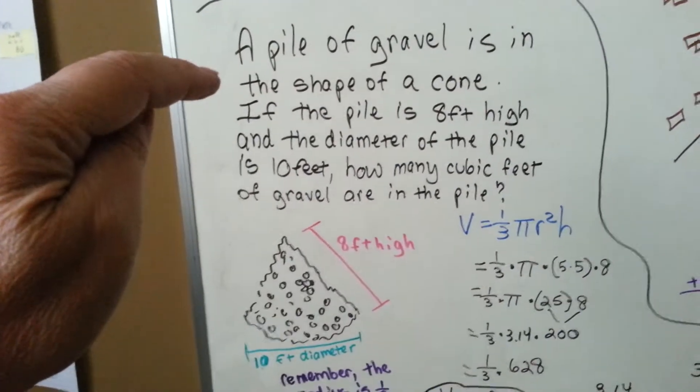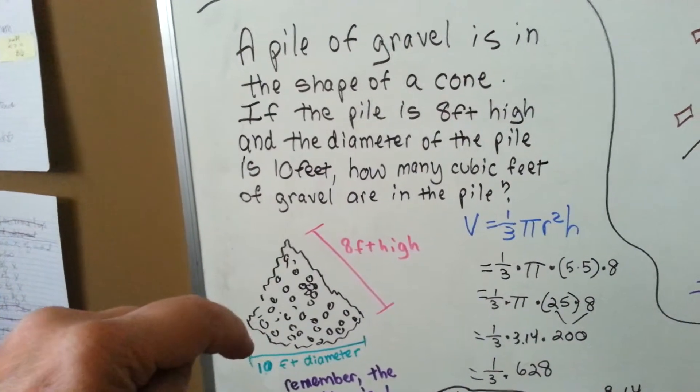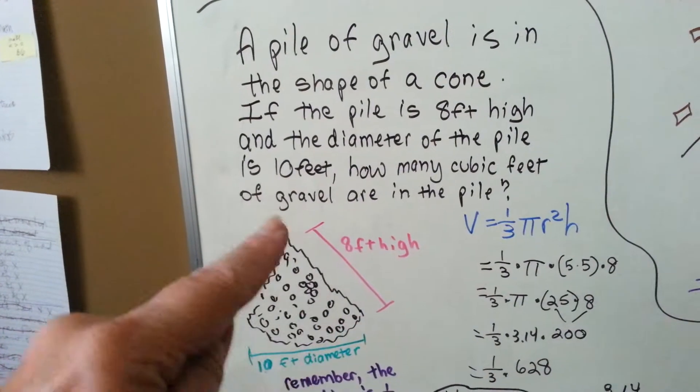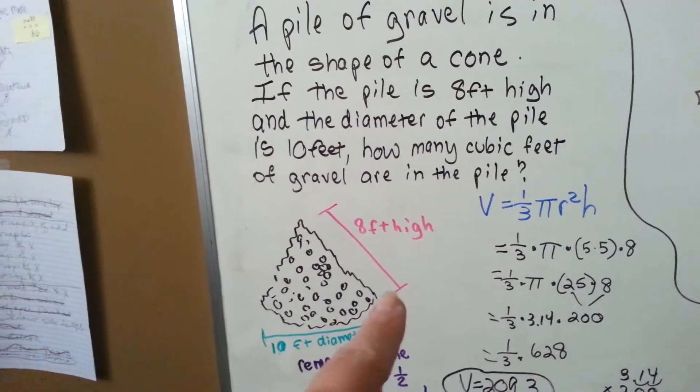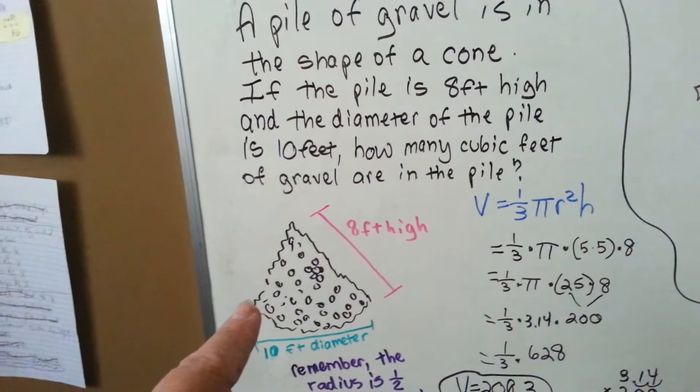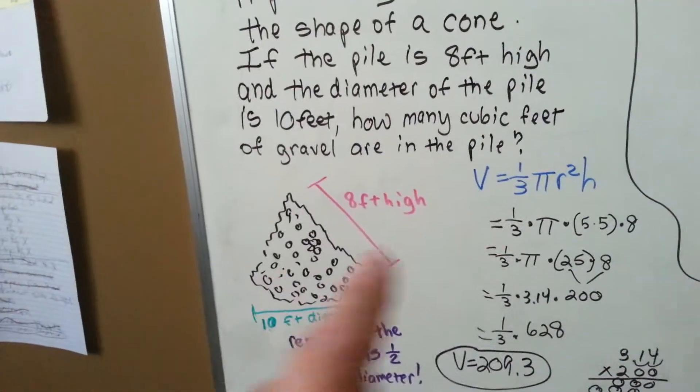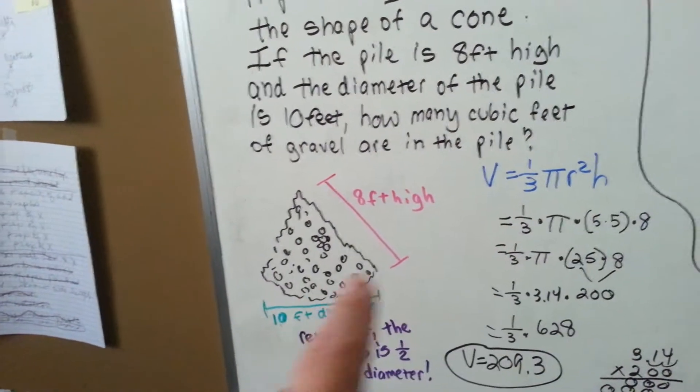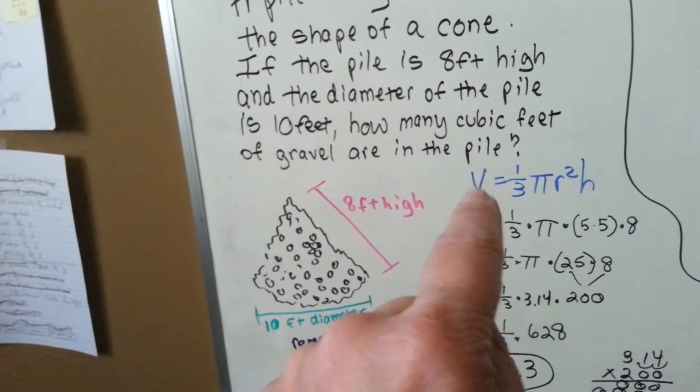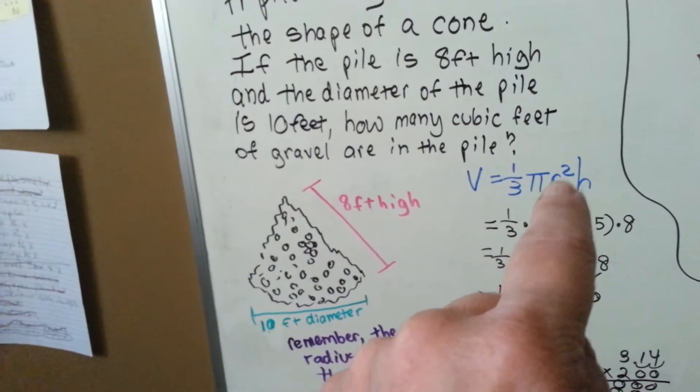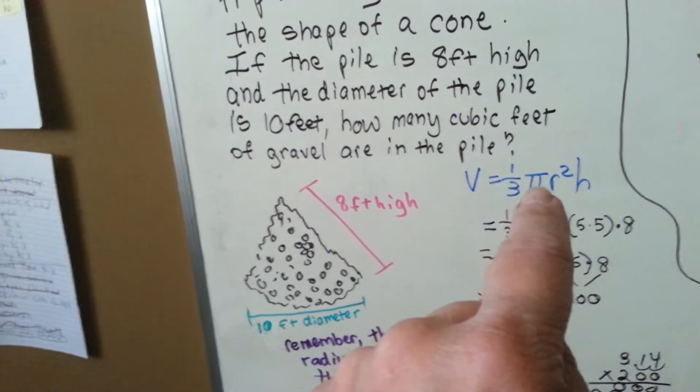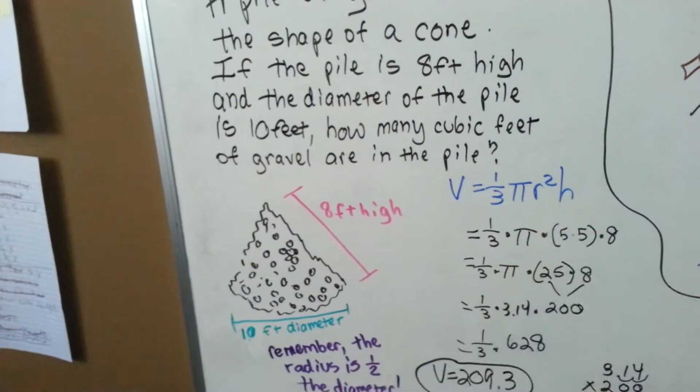A pile of gravel is in the shape of a cone. If the pile is 8 feet high and the diameter of the pile is 10 feet, how many cubic feet of gravel are in the pile? Well, remember, we need to do the radius squared. Volume equals 1 third times radius squared times pi times the height.